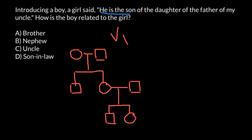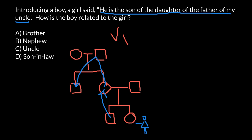He is the son of the daughter of the father of my uncle. Our girl is pointing at her brother and saying that he is the son. So, he is the son of the daughter of the father of my uncle. This is not the only variant that exists.